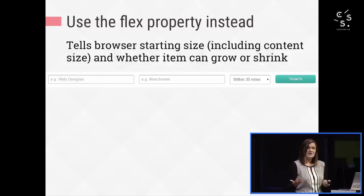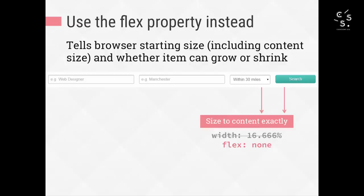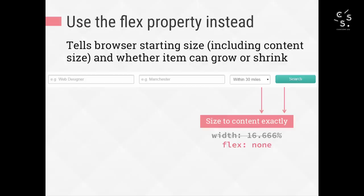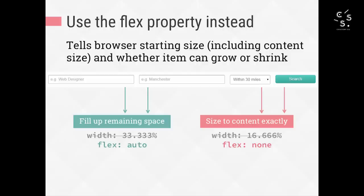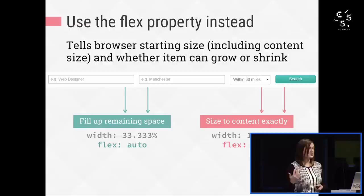This is the perfect case for Flexbox because it lets you avoid explicit dimensions and use the flex property instead to control sizing. This tells the browser the starting size that you want to use, including the native content size, and whether the item can grow bigger or smaller than that size to fit the space available. For the select menu and the button, I want them to stay at their content width exactly — not get bigger or smaller, so I don't want them to flex. With the text fields, I want them to stretch to take up whatever space is left after the select, the button, and all the margins have been accounted for. I just tell them to flex and let the browser figure out the math. I can also keep the percentage widths in place for non-supporting browsers and add these flex values on top as an enhancement.